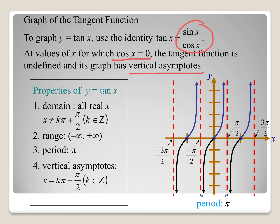The vertical asymptotes are at multiples of pi over 2 — those values excluded from the domain. Looking at the graph, we have an asymptote at positive pi over 2 and at negative pi over 2. We sketch the graph in between, crossing through the middle at 0. That is one cycle of the tangent function. The second cycle starts at pi over 2; adding the period pi gives the next asymptote at 3 pi over 2.